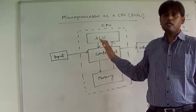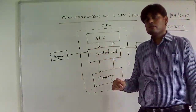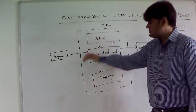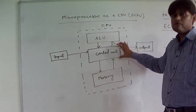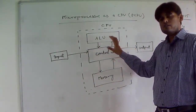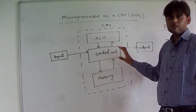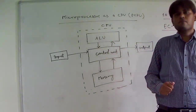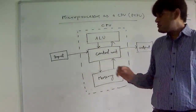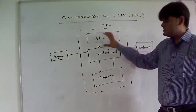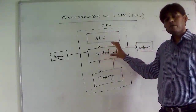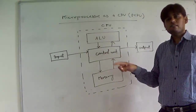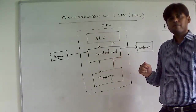That is the traditional block diagram of a computer. As I mentioned, in the 1950s–1960s all these blocks were made up of discrete electronic components. Now, as there is advancement in technology, most of the parts of the CPU are being put on a single chip, and an integrated circuit is being made.